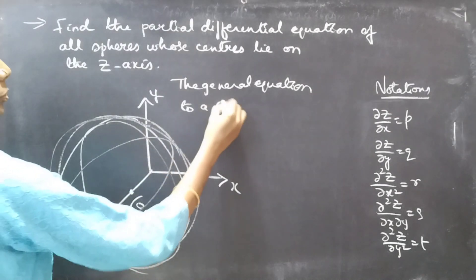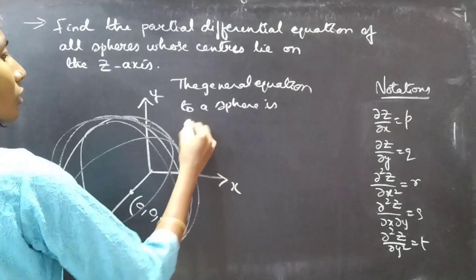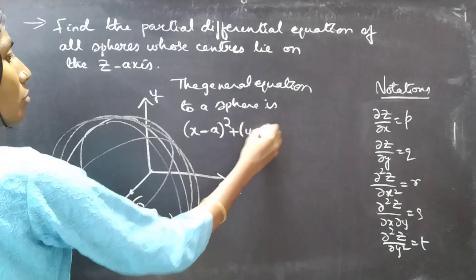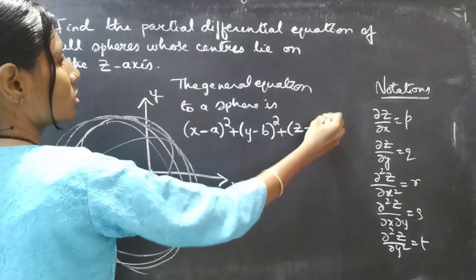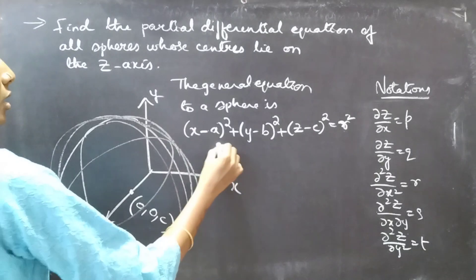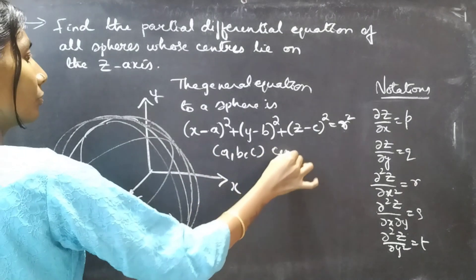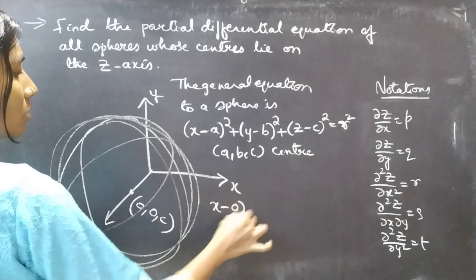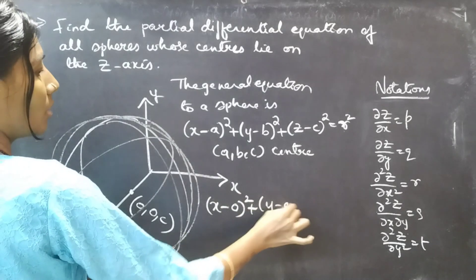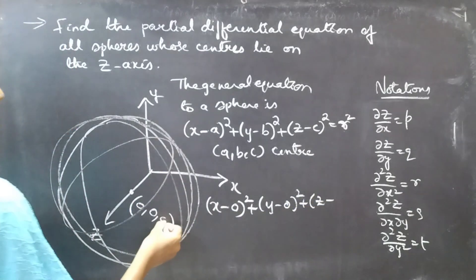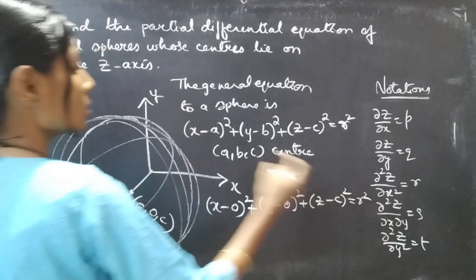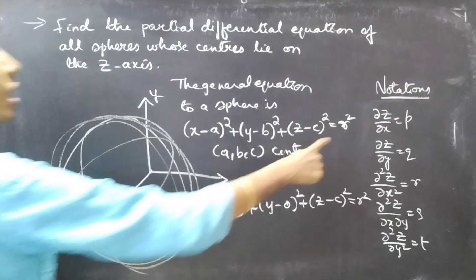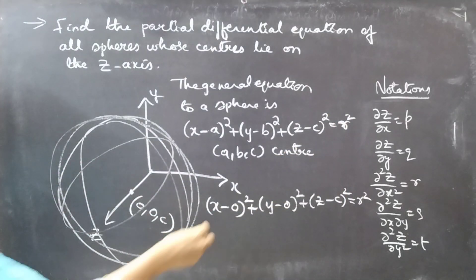We know that the general equation of a sphere is: (x − a)² + (y − b)² + (z − c)² = r², where r is the radius and (a, b, c) is the center. In our case, the sphere's center lies at coordinate (0, 0, c), so a = 0 and b = 0. Here c and r are considered arbitrary constants.